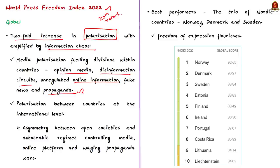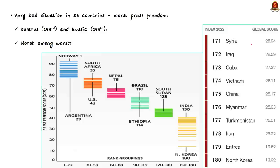Countries that have done very well include the trio of Nordic countries — Norway, Denmark and Sweden — at the top of the index. These three countries continue to serve as a democratic model where freedom of expression flourishes. Norway is at the top. Other important countries like South Africa, Nepal and Brazil are also listed. North Korea has been ranked at the 180th position.